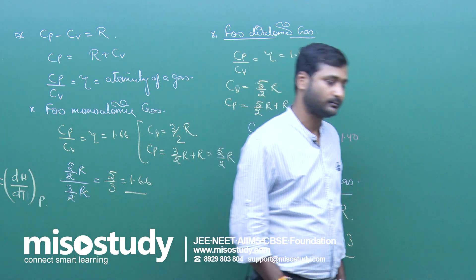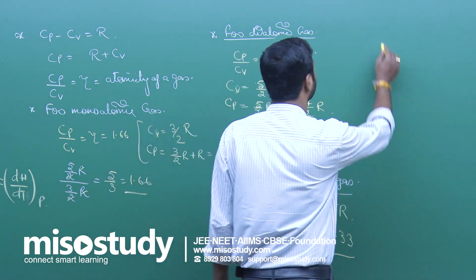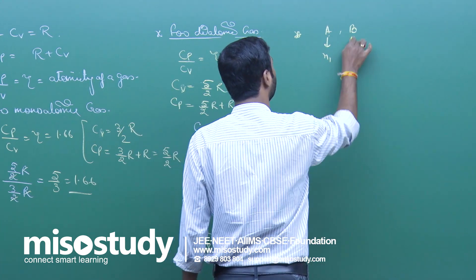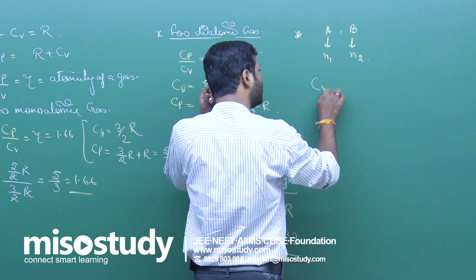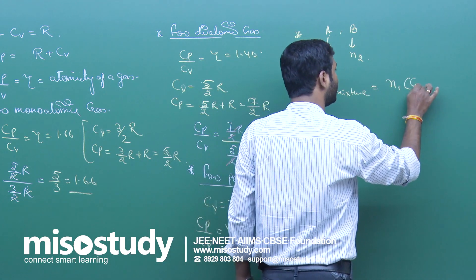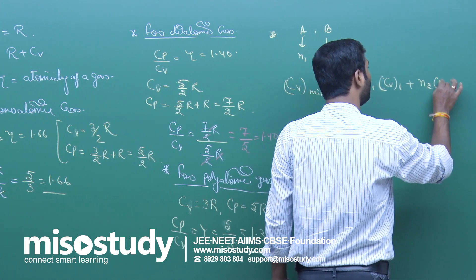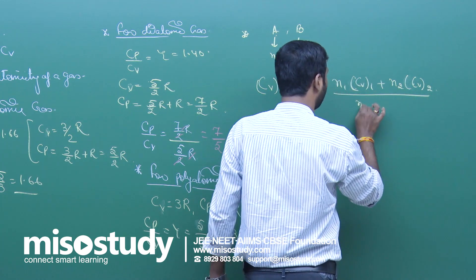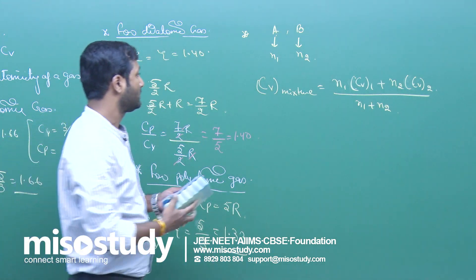I am giving you 5 minutes to note it down. Now if anyone asks: suppose there are 2 non-reacting gases having number of moles n1 and n2 — what is the value of Cv of the mixture? That will be equal to n1·Cv1 plus n2·Cv2, all divided by n1 plus n2.